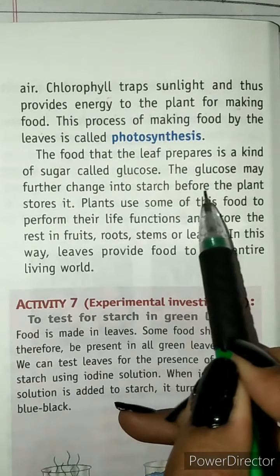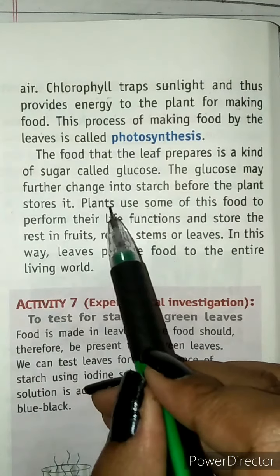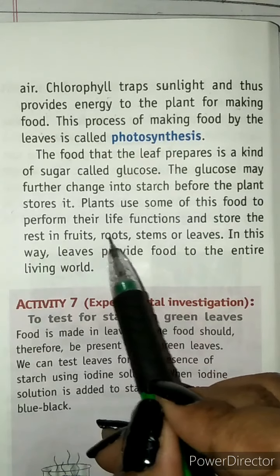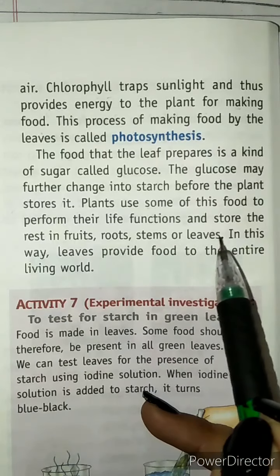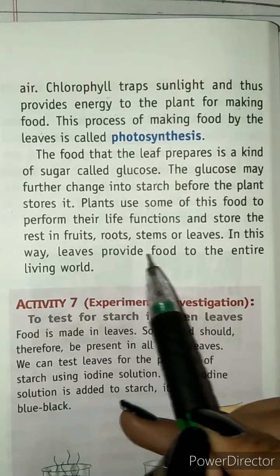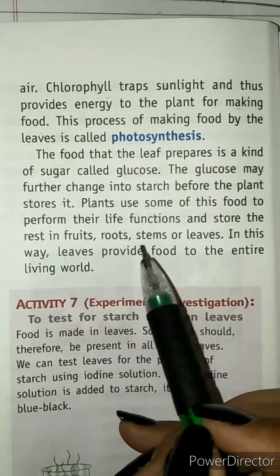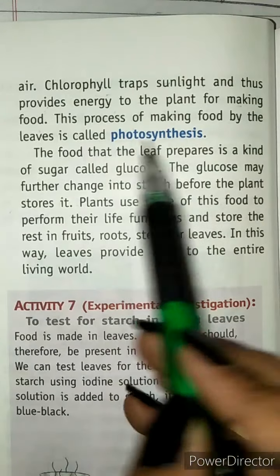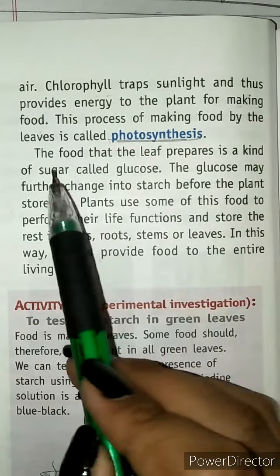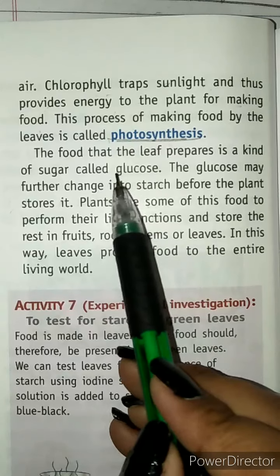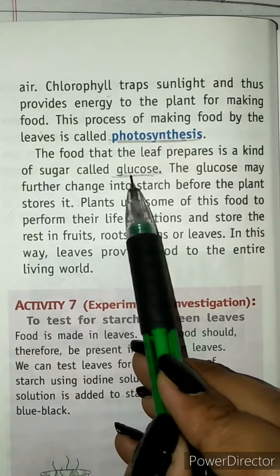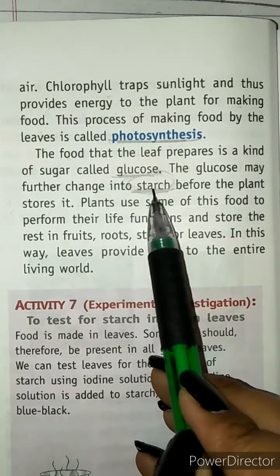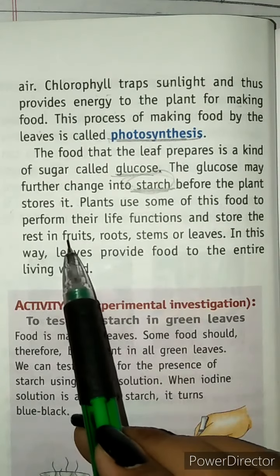Plants use some of this food to perform their life functions and store the rest in fruits, stems, or leaves. In this way, leaves provide food to the entire living world. During photosynthesis, leaves prepare glucose, which then changes into starch, stored in different parts of the plant.